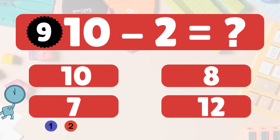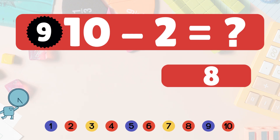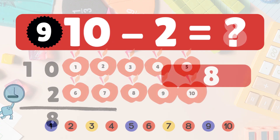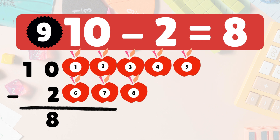Next, 10 minus 2 equals what? 10 minus 2 is 8. Here we have 10 apples. Take 2 away — 8 apples left: 1, 2, 3, 4, 5, 6, 7, 8. So 10 minus 2 is 8.